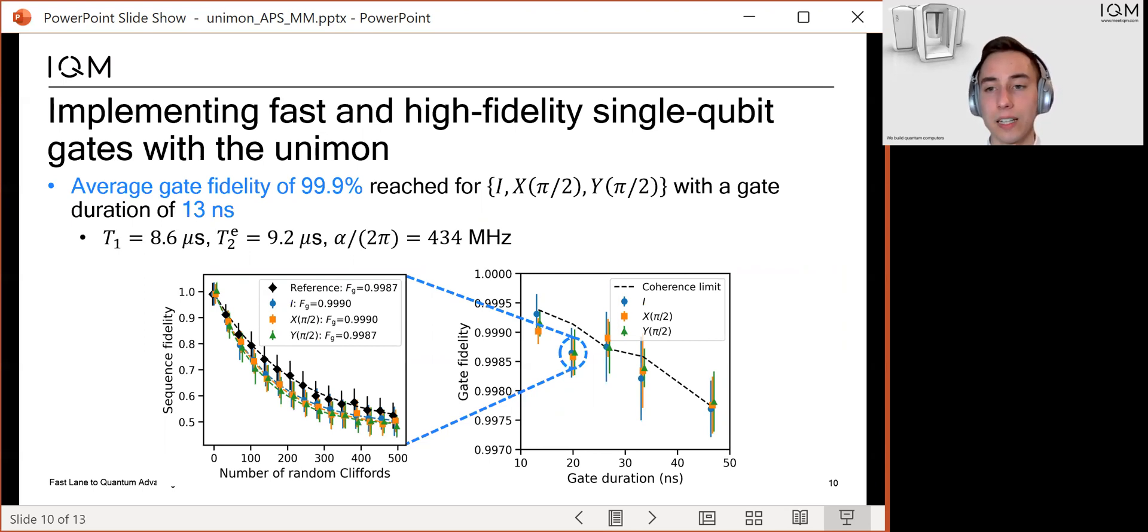When we studied the gate fidelity as a function of gate duration, we learned that the gate fidelity exceeds 99.9% for 13 nanosecond gates. We also observed that the gate fidelity was close to the coherence limit for all of the gate durations. This suggests that the gate duration could have been made even shorter while retaining a high fidelity.